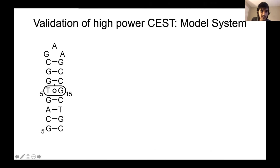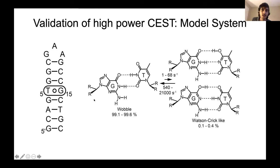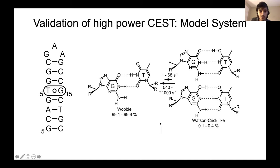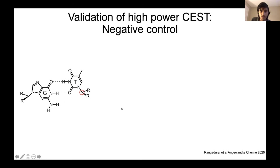As a model system, we used a DNA hairpin containing a GT mismatch. Previous studies in the lab showed that GT mismatches undergo conformational exchange between a wobble conformation and a Watson-Crick-like conformation, with an exchange rate on the order of a few thousands per second. Since this has already been characterized, we used it to benchmark our approach.